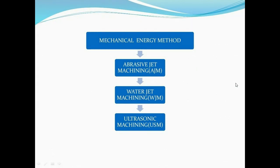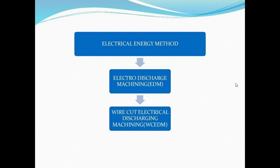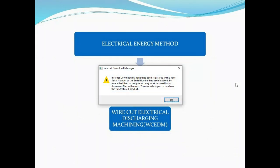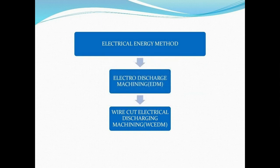The first is mechanical energy methods, which includes three machining processes: abrasive jet machining, water jet machining, and ultrasonic machining. The second is electrical energy methods, which includes two processes: electro discharge machining (EDM) and wire cut electrical discharge machining. Both are involved in electrical energy methods.